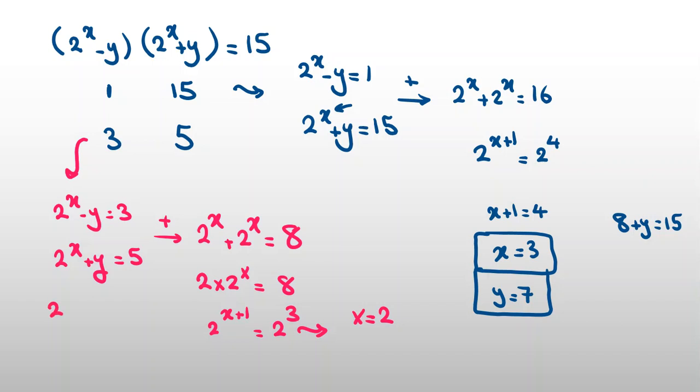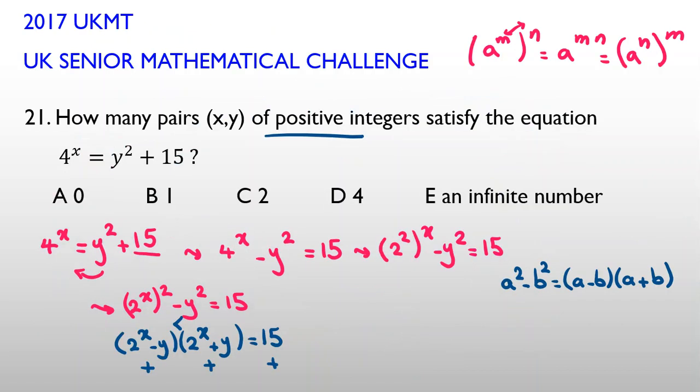If we replace x = 2 here, 2^2 + y = 5. 2^2 is 4, so y should be 1. So we found two answers: (3,7) and (2,1). So the answer is C.